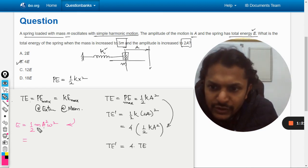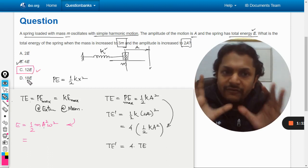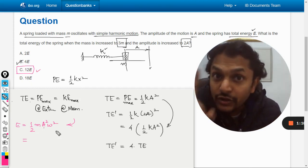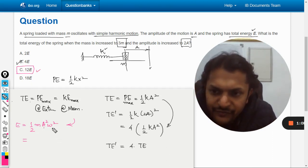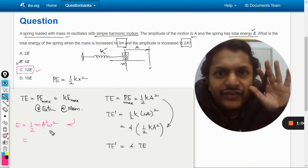And if we use this formula, you will say that mass is now three times and amplitude is two times, so it becomes 4 into 3, that is 12. So might be that all the students are getting the answer as 12E, for majority of the students, but that is not right.